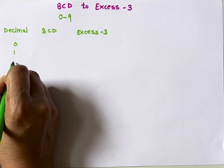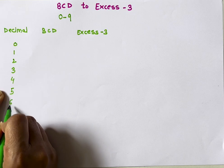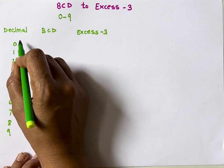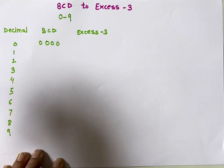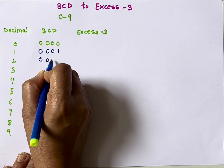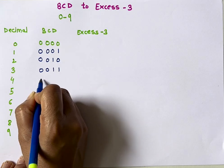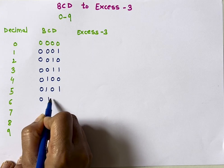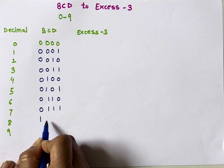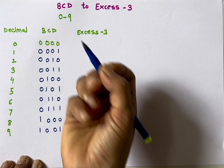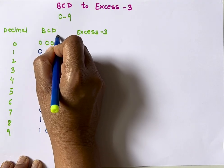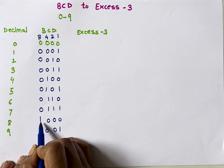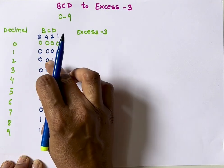Decimal numbers are from 0 to 9. The binary equivalents are: 0 is 0000, 1 is 0001, 2 is 0010, 3 is 0011, 4 is 0100, 5 is 0101, 6 is 0110, 7 is 0111, 8 is 1000, and 9 is 1001. The bit positions represent weights 2^0=1, 2^1=2, 2^2=4, and 2^3=8.